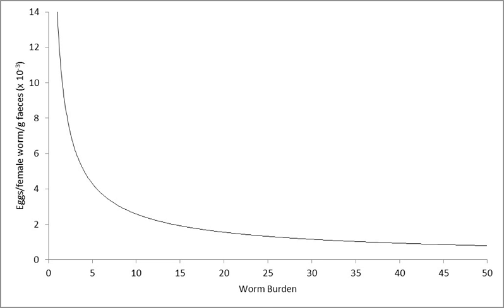Density-dependent fecundity exists, where the birth rate falls as competition increases. In the context of gastrointestinal nematodes, the weight of female Ascaris lumbricoides and its rates of egg production decrease as host infection intensity increases. Thus, the per capita contribution of each worm to transmission decreases as a function of infection intensity.